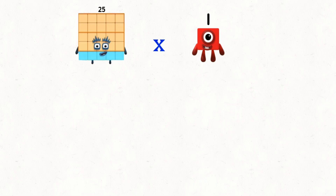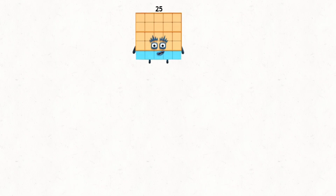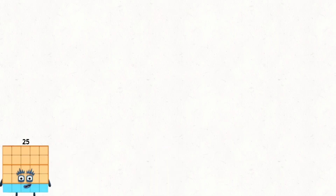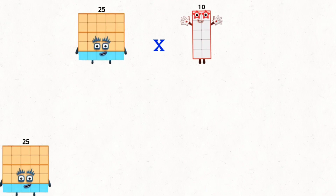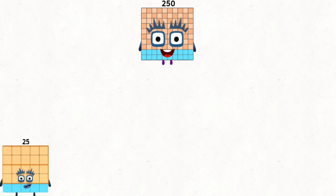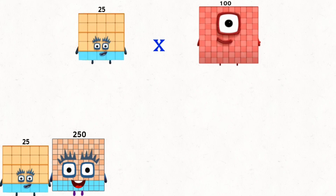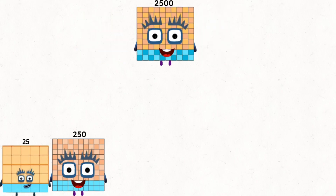Stage 4. 25 times 1 equals 25. 25 times 1,000 equals 1,500. 25 times 100 equals 1,500.